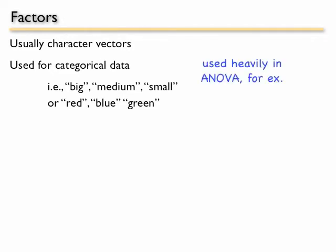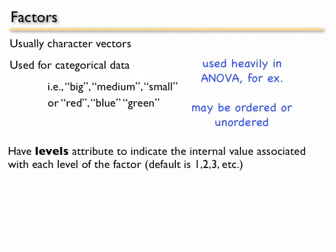These are used heavily in ANOVA, for example, and they may be ordered or unordered. In R, factors have levels. They have this other attribute called levels to indicate the internal value that's associated with each level of the factor.